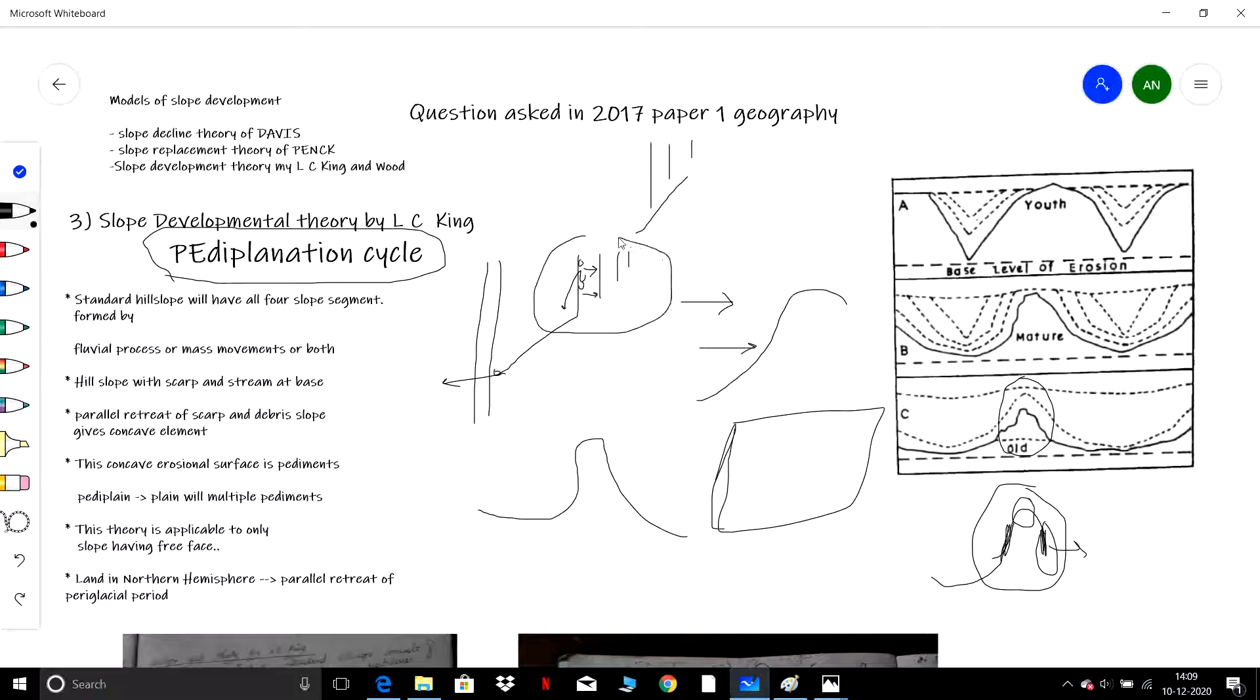Pediplanation cycle—remember, this is applicable only for a slope which has a free face, not for any other. If a slope doesn't have a free face or scarp, then it will not undergo pediplanation cycle. For example, many of the slopes which are found in the northern hemisphere, suppose in the Eurasian continent,